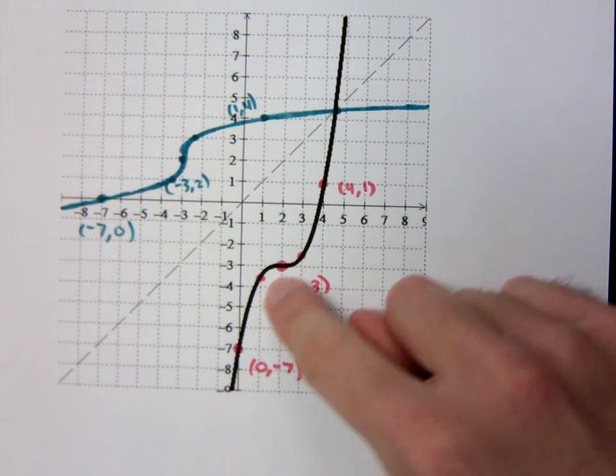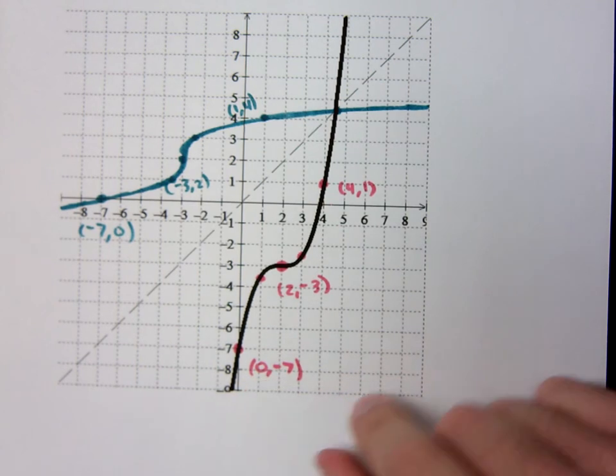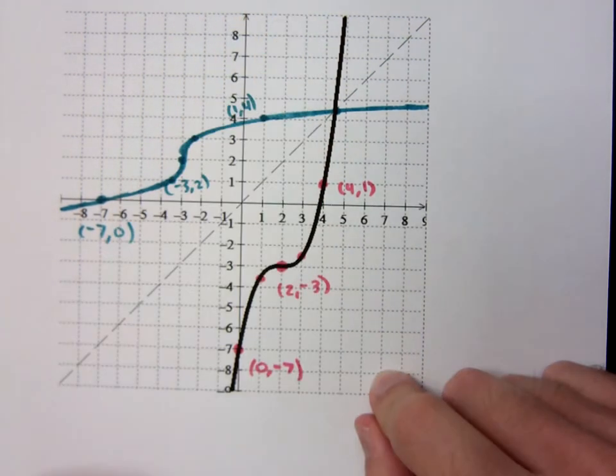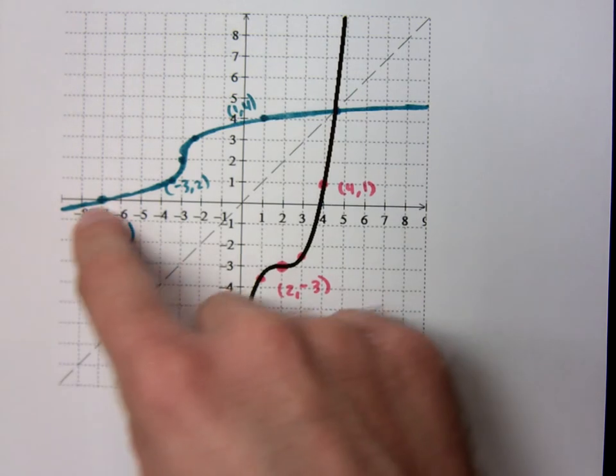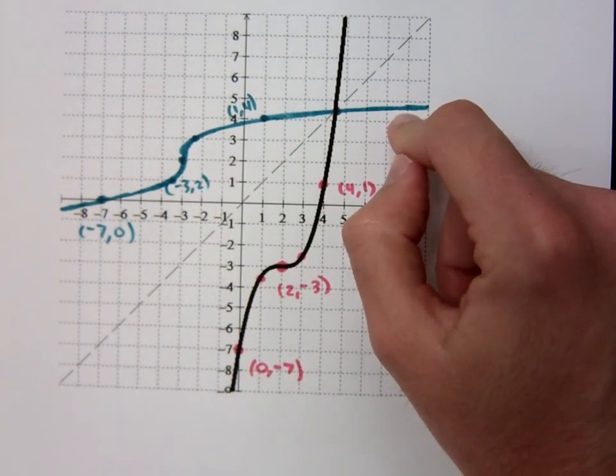What does this black line remind you of? What function does he remind you of? The cube guy, right? And what does his inverse remind you of? The cube root. Right?